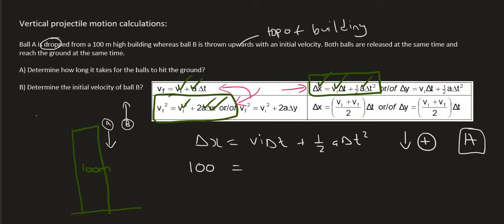The initial velocity of that ball is 0. The time, we don't know. Gravity is going to be positive 9.8 because we chose down as positive. And then we have it as t². Now this part just falls away.